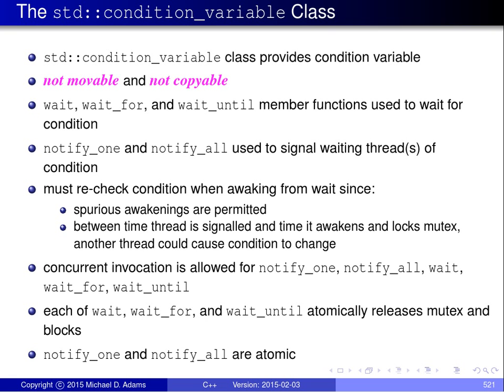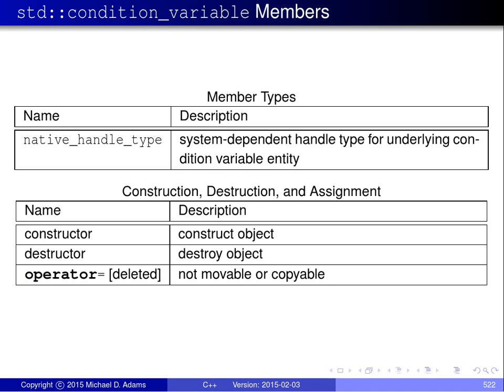Concurrent invocation is allowed for notify_one, notify_all, wait, wait_for, and wait_until. In other words, the condition_variable class provides the necessary internal synchronization to ensure that all of this works with no problem. And lastly, the notify_one and notify_all functions are atomic.